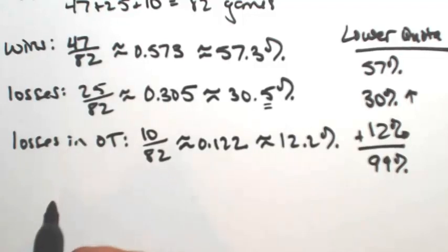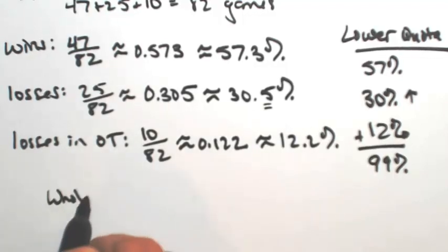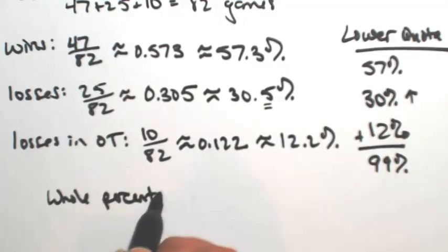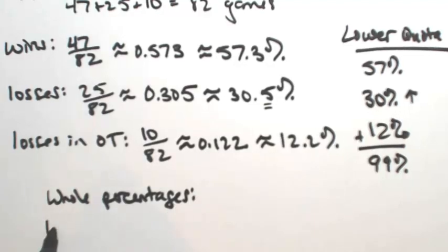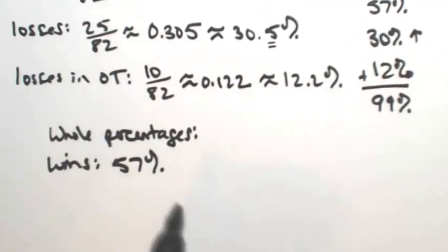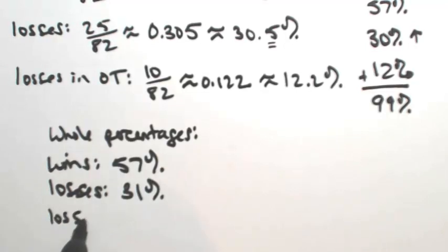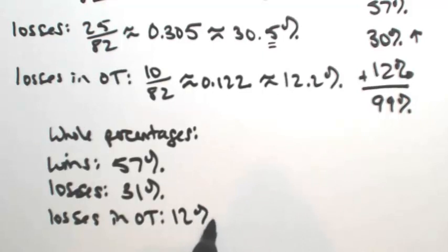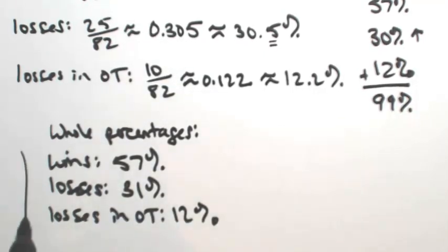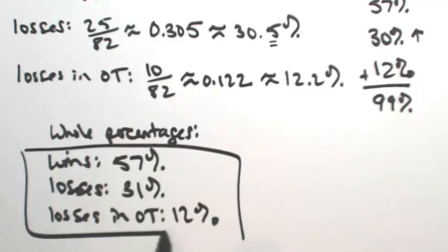So altogether, the whole percentages for the wins is going to be 57%. For the losses, we're going to give it the extra percent to make it 31%. And then for the losses in overtime, 12%. So altogether now, we have 100%. This is the method called the Hamilton method. Thank you.